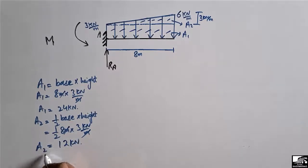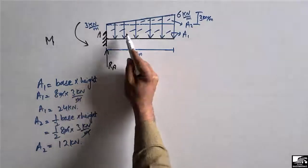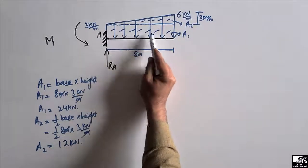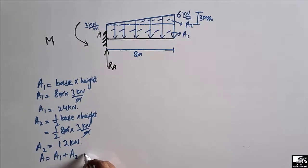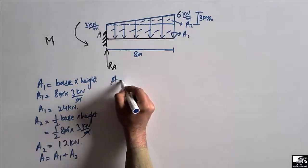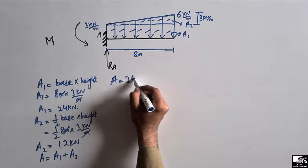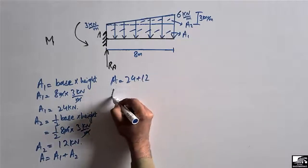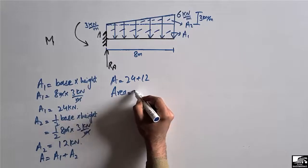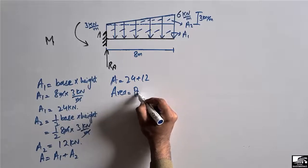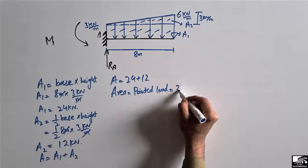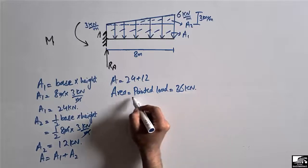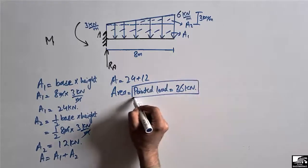Now the total area equals A1 plus A2. So the total pointed load, or concentrated load, is equal to 24 plus 12, which gives us 36 kilonewton. This is the total pointed load acting on this beam.